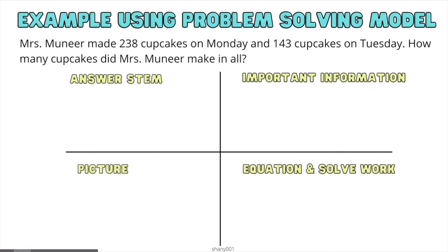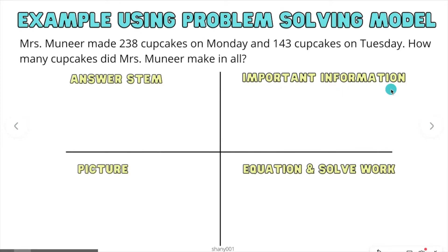Here is my problem-solving model. Anytime you have a word problem, you are going to draw your four-square model. The first box is where you write the answer stem. The second one is where you write important information. The third one is a picture model. And the fourth is where you write the equation and solve your problem. Let's go ahead and look at the answer stem.